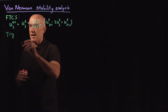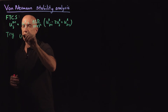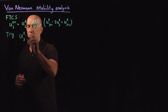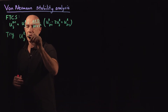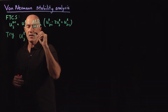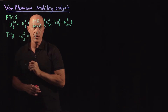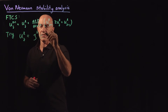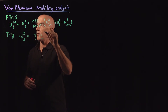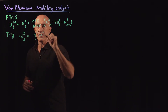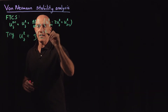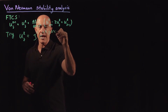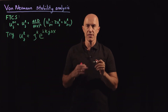The idea here is that we try an ansatz that we substitute into this equation to determine its stability. The ansatz we use is: U_J^L equals ξ raised to the Lth power, times an exponential with imaginary exponent — e^(iKJΔx). Here i is the square root of minus one, K is a wave number, J is the grid point index, and ΔX is the grid spacing.